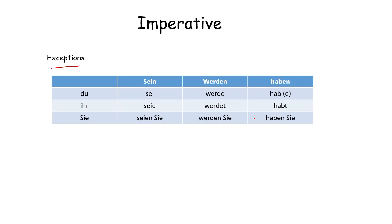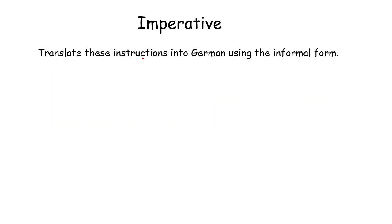Let's see some of the examples with du and Sie form. Translate this instruction to German using the informal form. Informal means du form. Go left. As we already know, we will remove du and st. So, geh links. Start with the verb. No du and st.